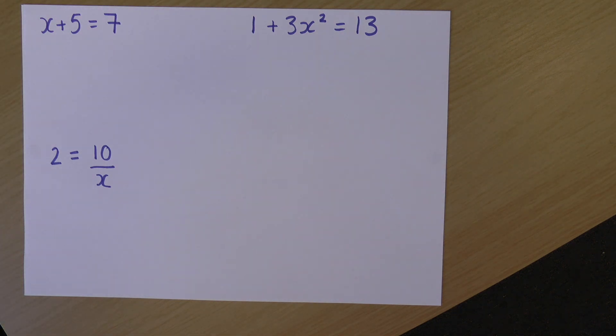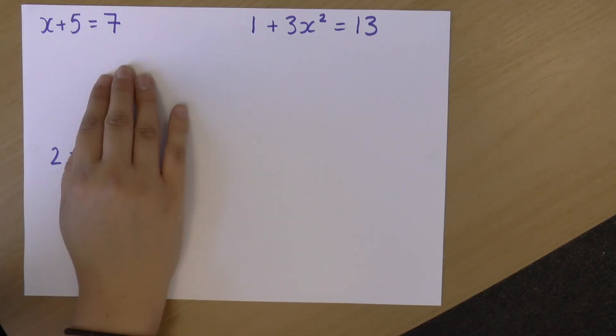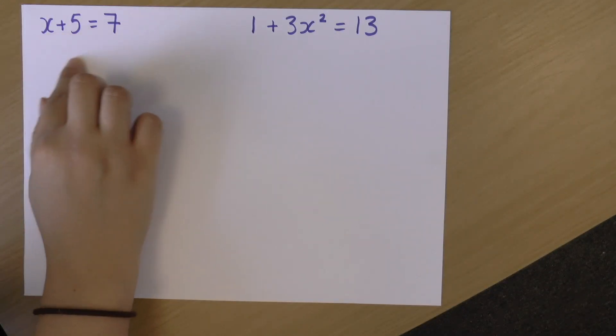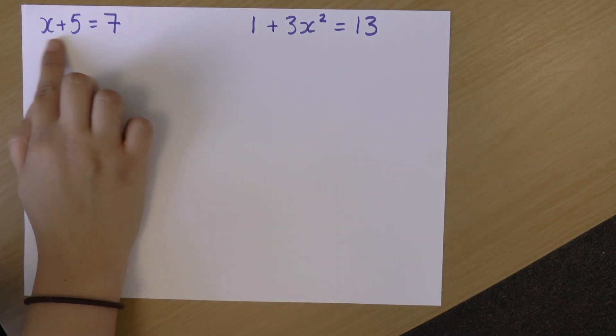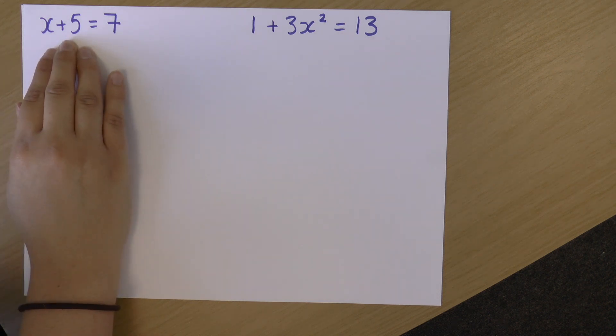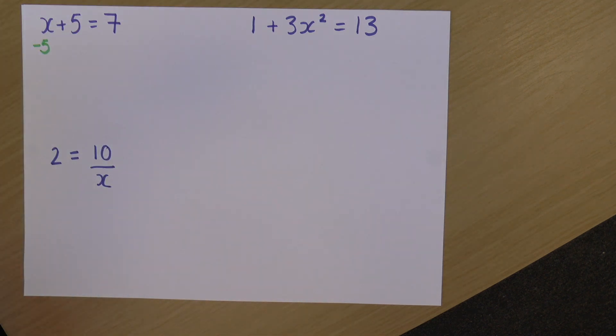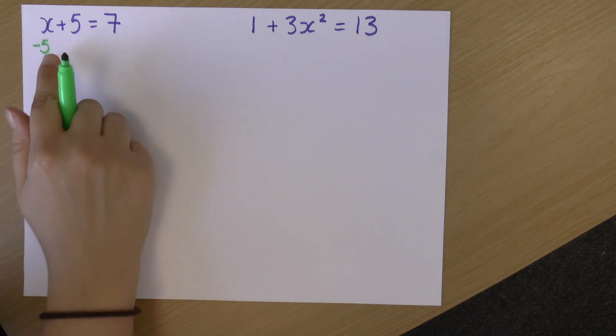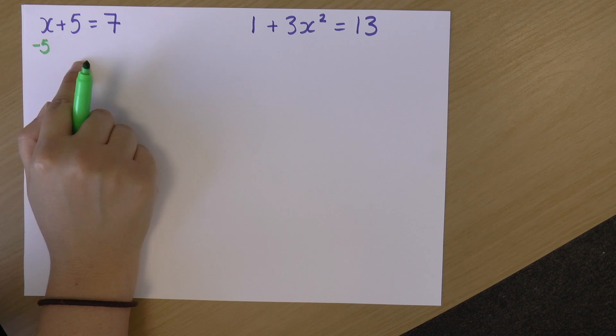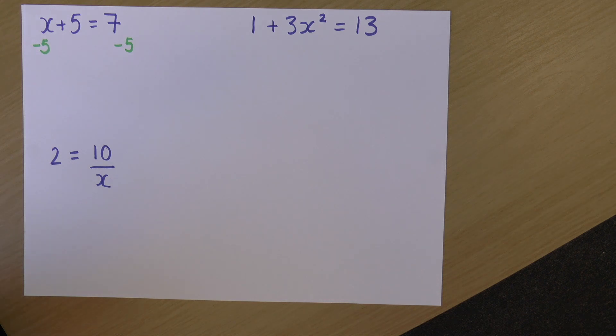So let's have a look at this one. When we're rearranging equations, the first thing I want to do is try and get x by itself. So currently on the left, I have x plus 5. Now I want to get rid of that 5, but I can't just scribble it out and pretend it doesn't exist. What I can do is I can take away 5 from that side. Now, I need to do the same to both sides whenever I'm rearranging equations.